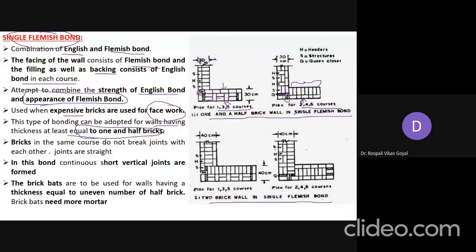In a two-brick thick wall, the front shows stretcher-header-stretcher-header arrangement, while the back shows all headers and all stretchers alternately, like English bond. Bricks in the same course do not break the joint — the joint is continuous. Continuous short vertical joints are also formed, meaning strength-wise it is not as good as English bond. Three-quarter bats are widely used in this bond.